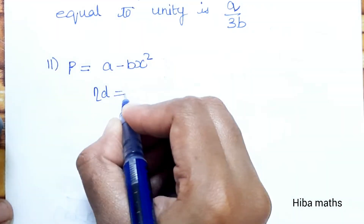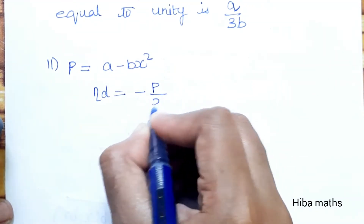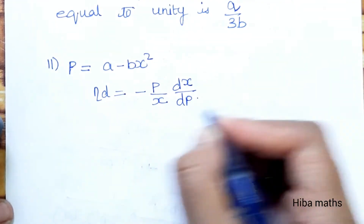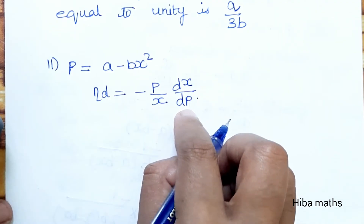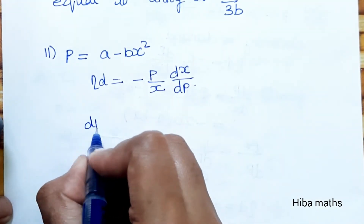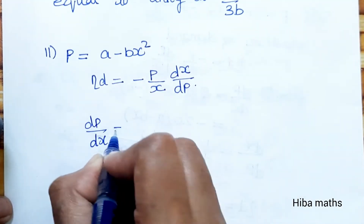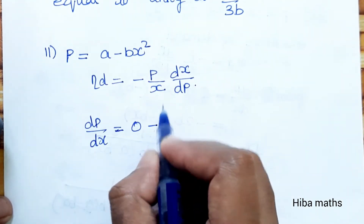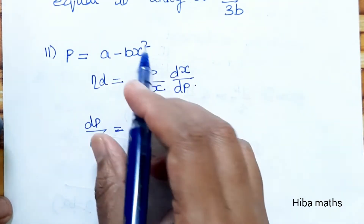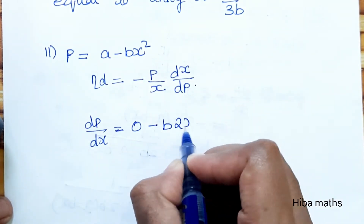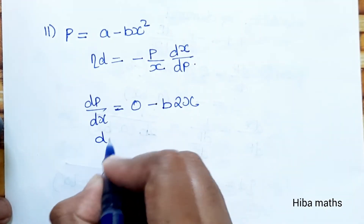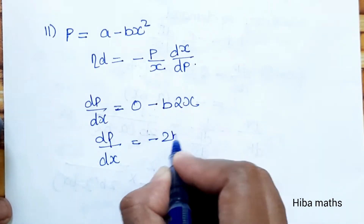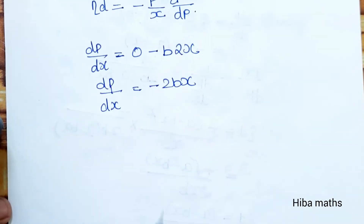Eta_d is equal to minus p by x into dx by dp. Now dx by dp equals 1 by dp by dx. Differentiating p equals a minus bx squared: the constant term differentiates to 0, and the coefficient b with x squared differentiates to give dp by dx equals minus 2bx.